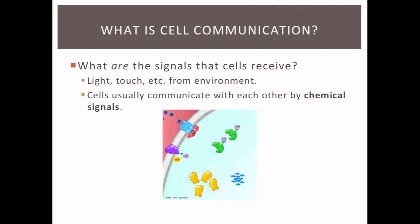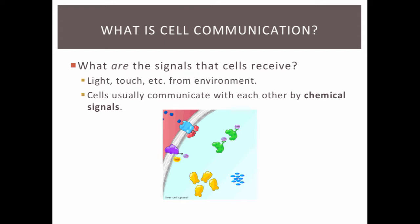So first, what are the signals that cells receive? Cells can talk with one another, but they don't talk with sound like humans do. Cells talk to one another or to their environment via light, touch, and other things. Cells usually communicate with one another by chemical signals.